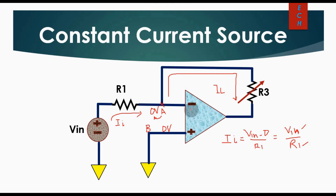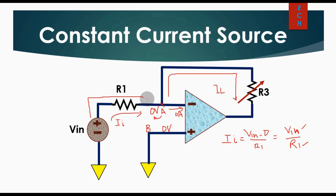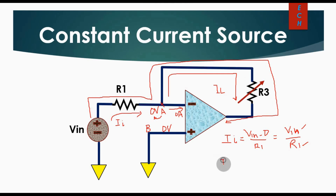You already know that the input impedance of an operational amplifier is very high, so the current flowing through the inverting terminal is theoretically zero amperes. Therefore, all the input current will flow through the load resistance — this is the current path.